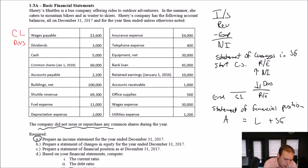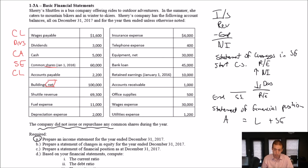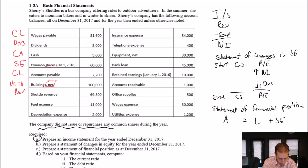Cash is an asset, and it's a current asset. Common shares — shouldn't be a surprise — shares are shareholders' equity. Accounts payable, that's a current liability. Buildings net — we'll explain the concept of net a little bit later, but think of that as the value of our buildings. Buildings are a non-current asset. Shuttle revenue — we're a shuttling service — so shuttle revenue is a revenue account.